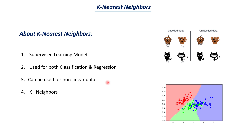Linear data means the features in the dataset have a linear relationship between them — you can think of this as direct proportionality or indirect proportionality. For example, if the value of one feature increases, the other increases as well, and if one decreases the other decreases. Models like logistic and linear regression can work well only on linear data, whereas k-nearest neighbor can also be used with non-linear datasets. The important thing about k-nearest neighbor is that we have to define some k value for it.